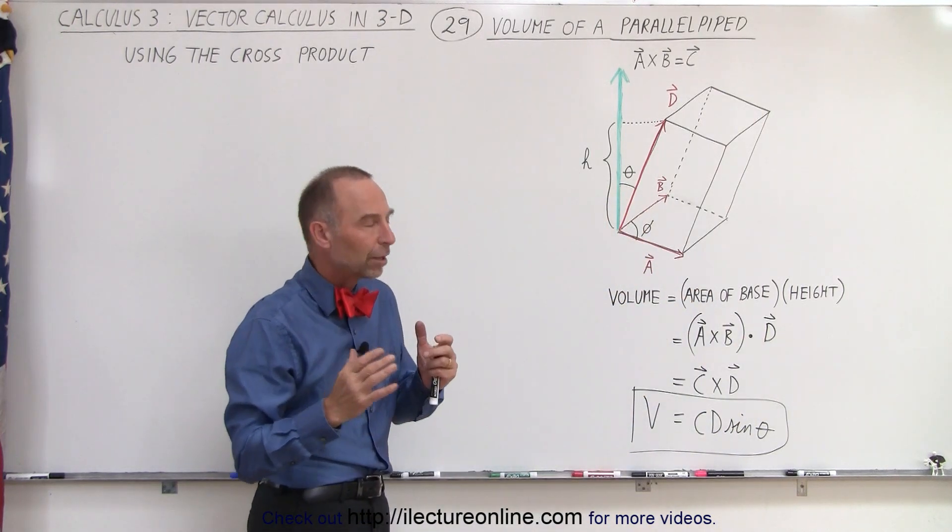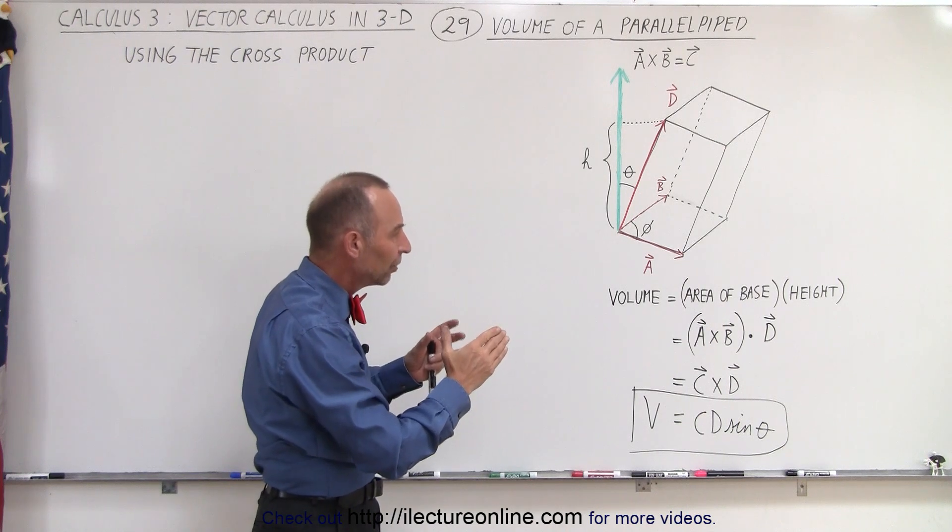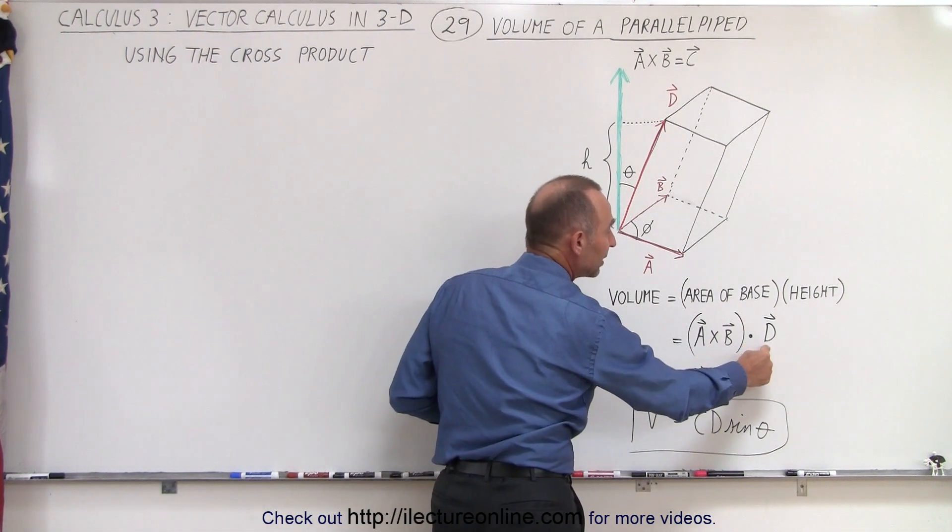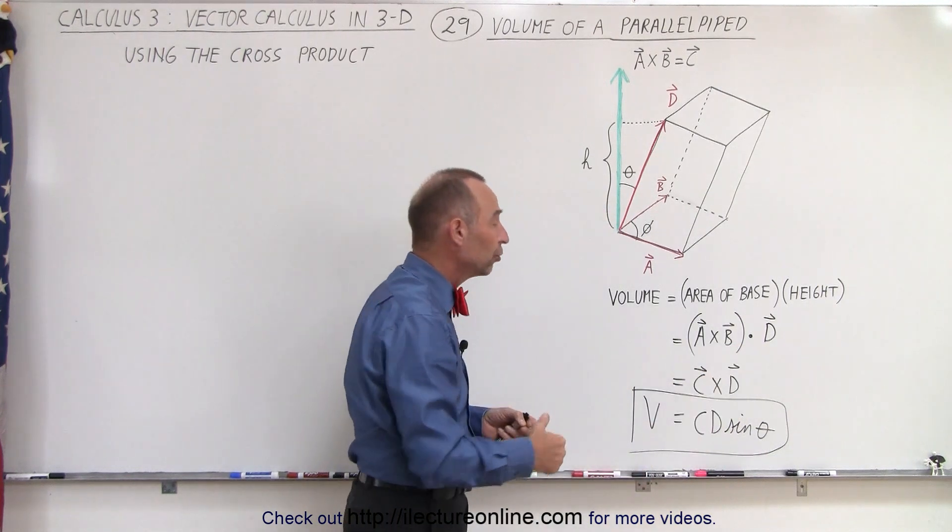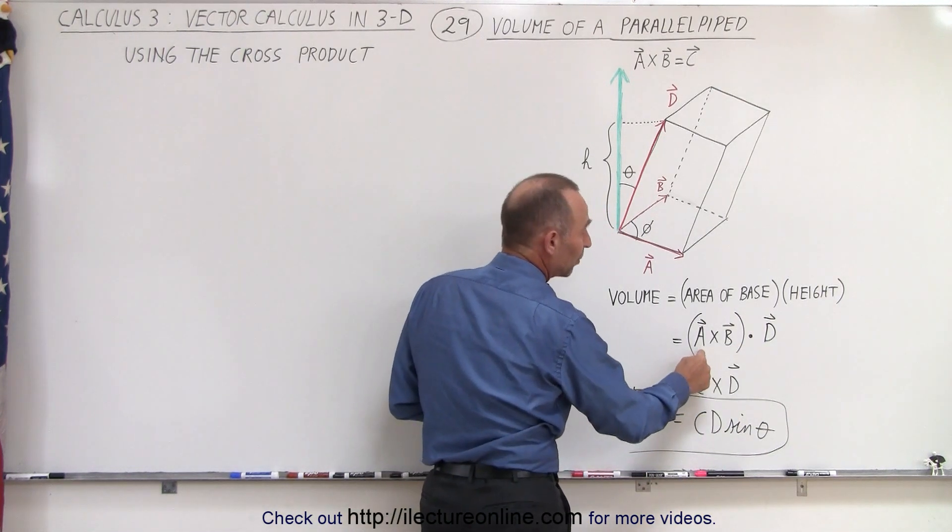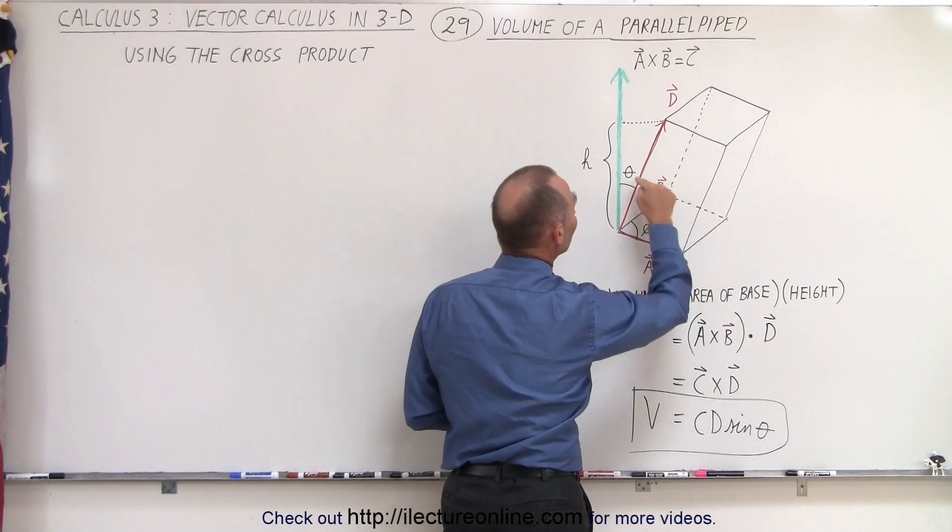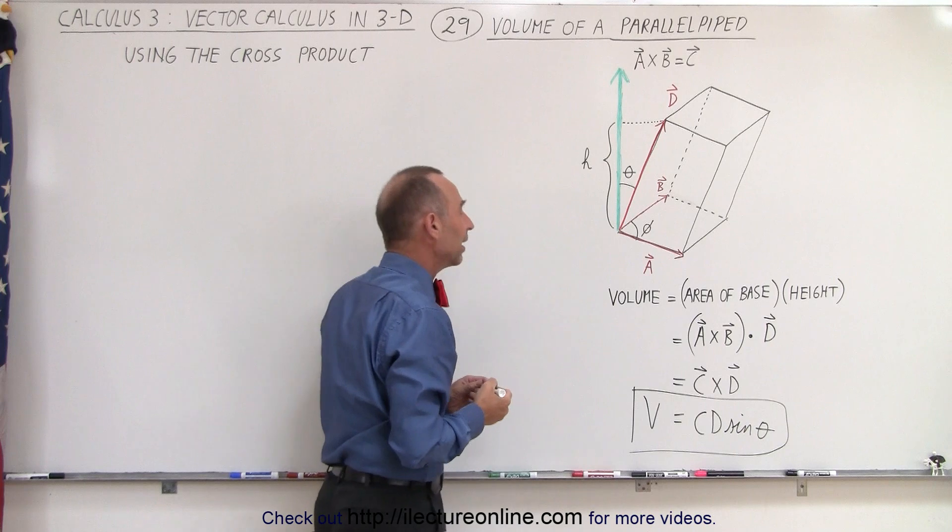Now, if you do not know the angles, then you actually have to calculate the cross product and dot it with D. If you do know the angles, you could potentially say, well, then this would be A times B times the sine of phi, and then times D times the cosine of theta.